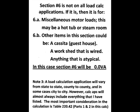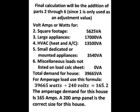Section 6 is not on all load calc applications. If it is, then it is for miscellaneous items like motor loads, a hot tub, maybe a steam room, a casita which is a guest house, or a work shed that's wired. In this case, section 6 will be 0 volt amps. The final calculations will be the addition of parts 2 through 6, since section 1 is only used as an adjustment value of the 35% minus the first 3,000. The total demand is 39,665 volt amps or watts.